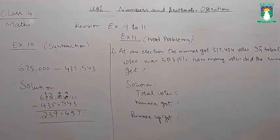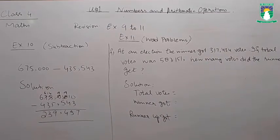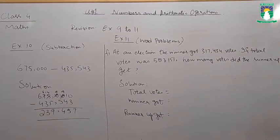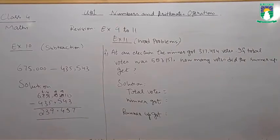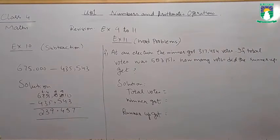At an election the winner got 317,434 votes. If the total votes was 587,151, how many votes did the runner-up get?